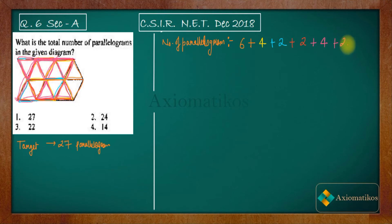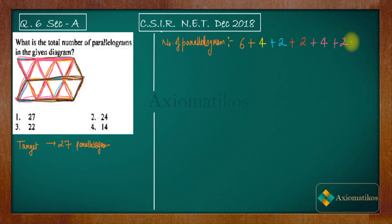Now let us change the color. There is a complete parallelogram here — from here to here — we haven't calculated it yet. And there is another one here. So you are getting two more parallelograms. Let us add two more to the list.